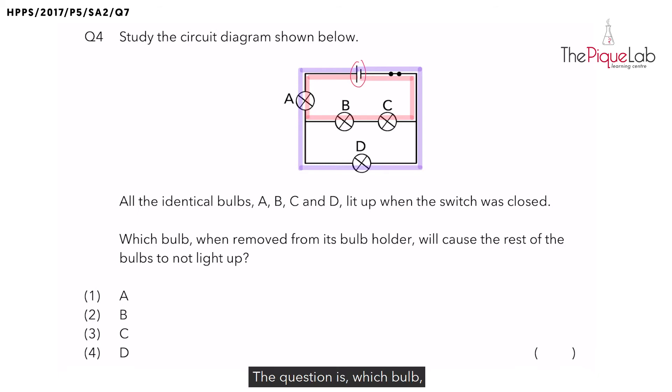The question says, which bulb, when removed from its bulb holder, will cause the rest of the bulbs not to light up? In other words, will removing this bulb create an open or closed circuit with the other bulbs?